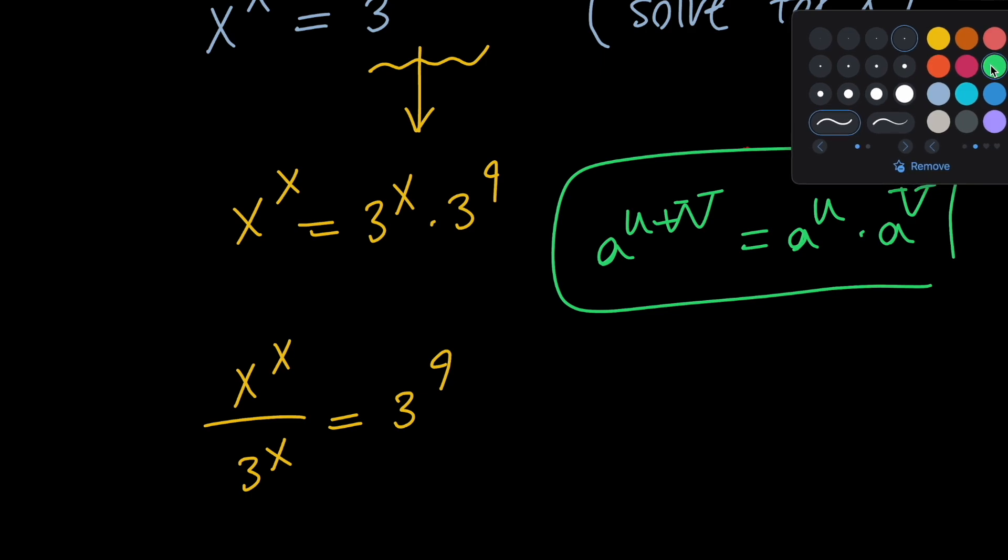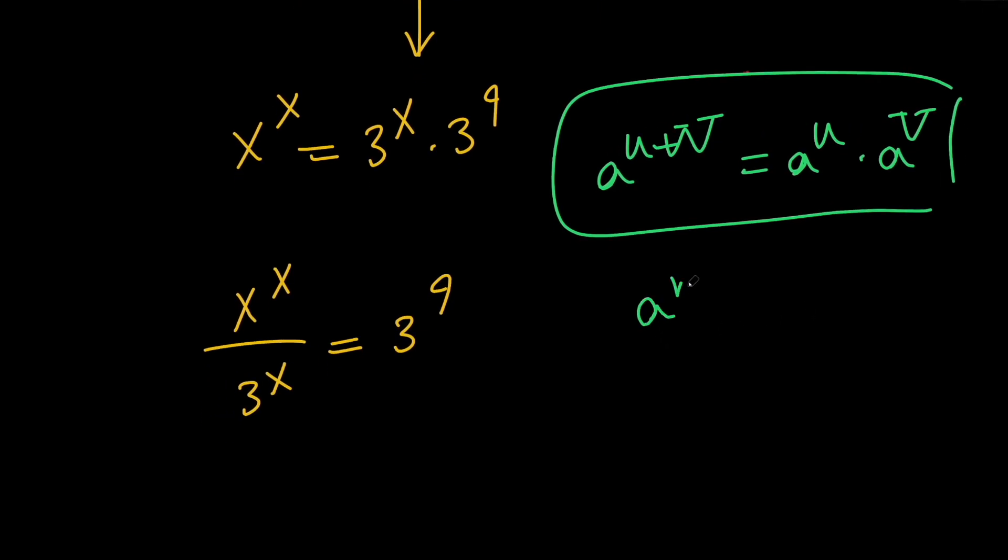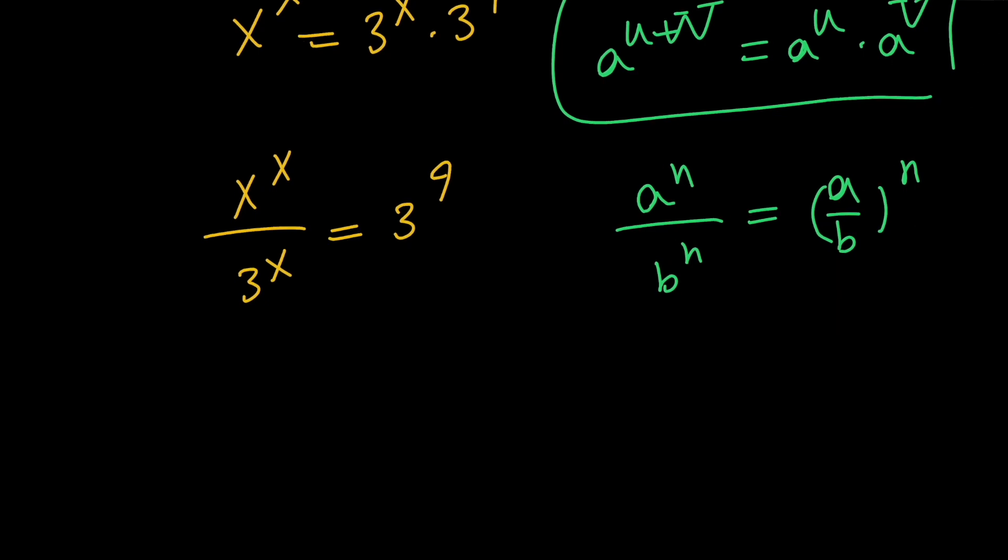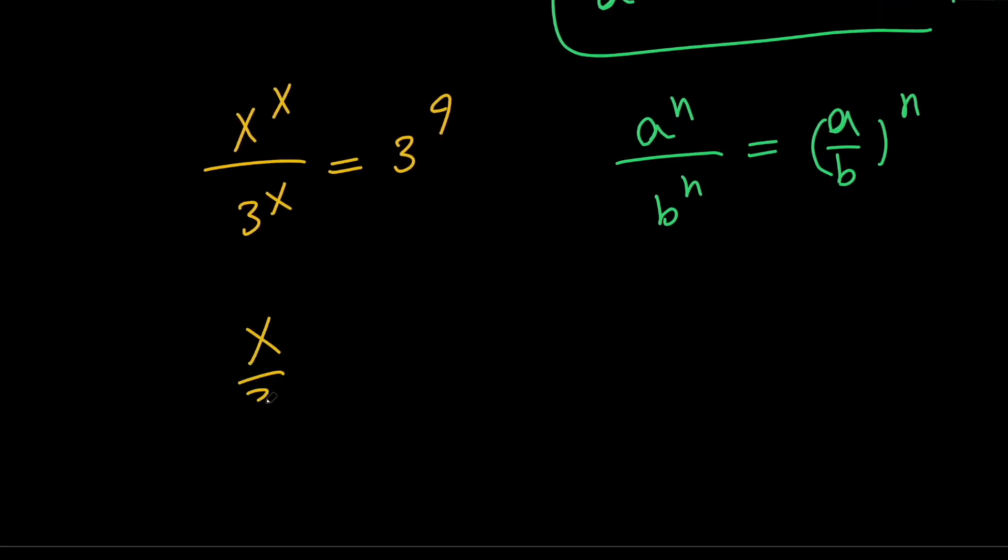Next, we know that a to the power of n over b to the power of n can be written as a over b to the power of n. So based on this, I can say that the left-hand side is equal to x over 3 to the power of x. Next, let's go ahead and raise both sides to the power of 1 third.